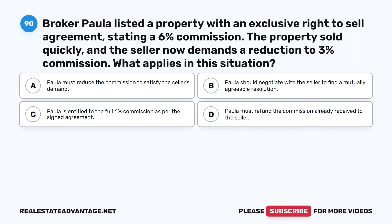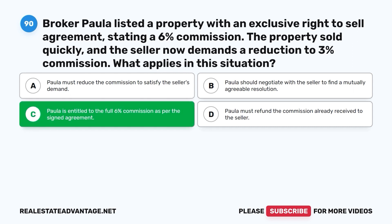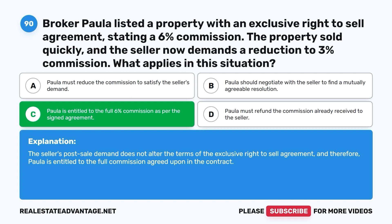Question 90. Broker Paula listed a property with an exclusive right to sell agreement, stating a 6% commission. The property sold quickly, and the seller now demands a reduction to 3% commission. What applies in this situation? A. Paula must reduce the commission to satisfy the seller's demand. B. Paula should negotiate with the seller to find a mutually agreeable resolution. C. Paula is entitled to the full 6% commission as per the signed agreement. D. Paula must refund the commission already received to the seller. The correct answer is C. The seller's post-sale demand does not alter the terms of the exclusive right to sell agreement, and therefore Paula is entitled to the full commission agreed upon in the contract.